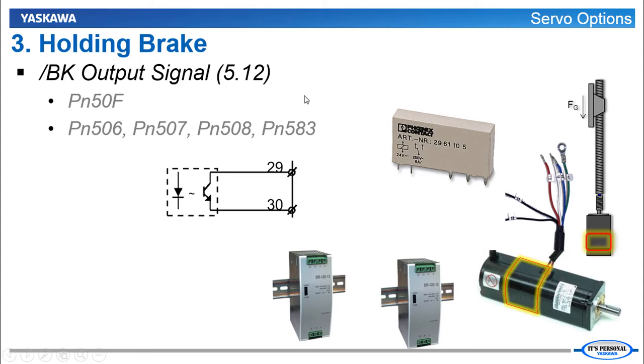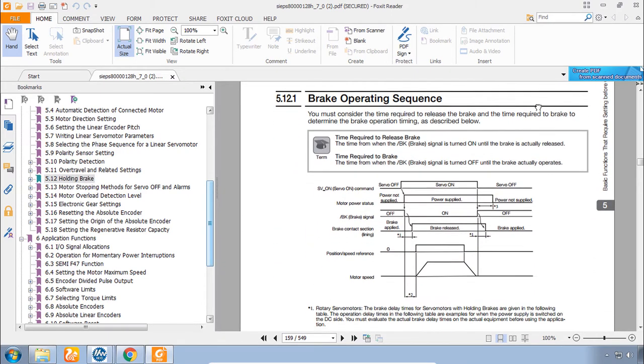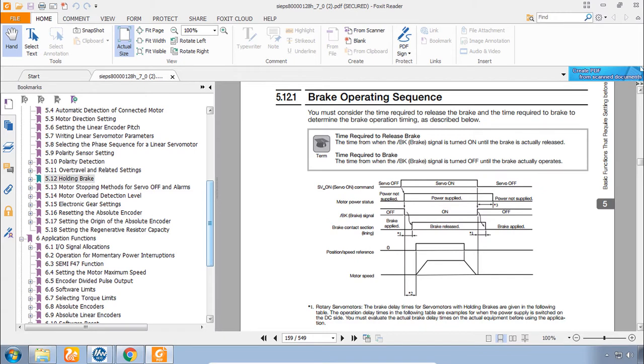The servo amplifier has an output labeled BK. Which can be wired to an external relay. This relay is then controlled by the output of the servo. And the output of the relay would be wired to the brake in order to apply power to the brake. Releasing the brake when the servo is on. So the output energizes. And the whole system releases the brake. And with the MPI-EC controllers this brake output is assigned to output number 1 on the amplifier's connector CN1. And the manual section 5.12 explains that also. And describes the different timing parameters. And parameters that control how the brake should be applied. If the motor stops during an alarm.